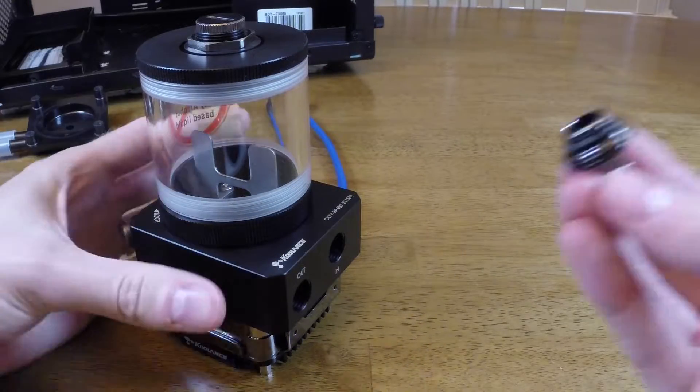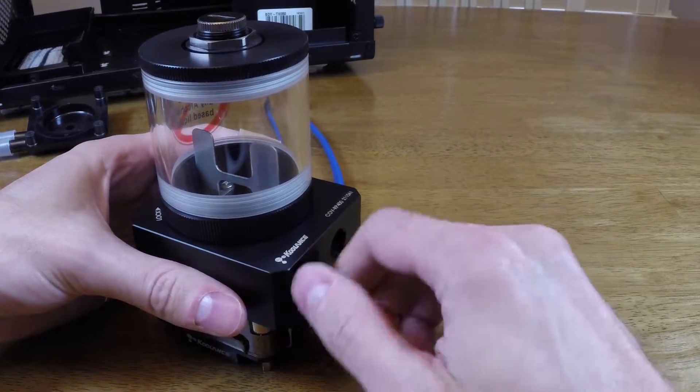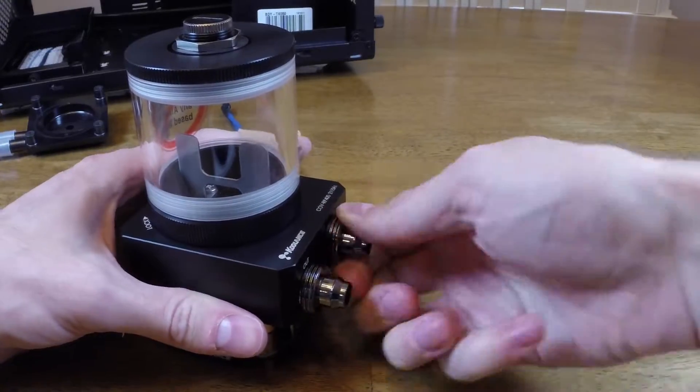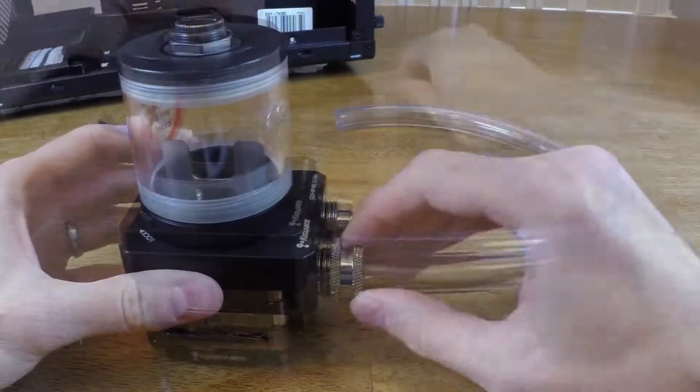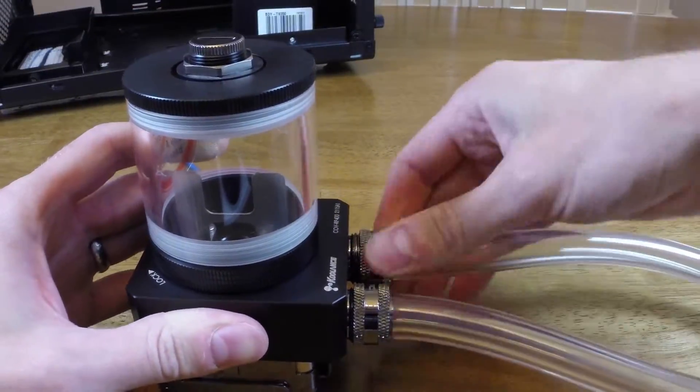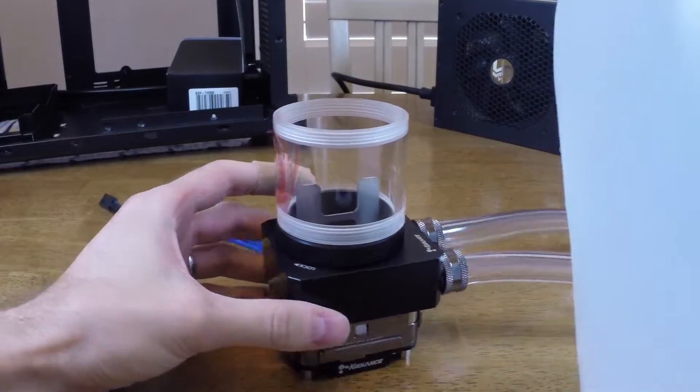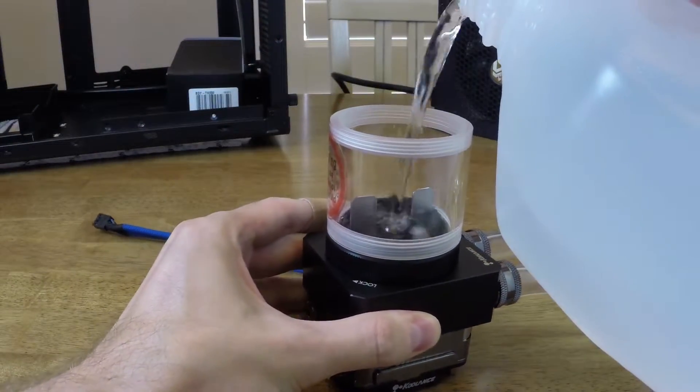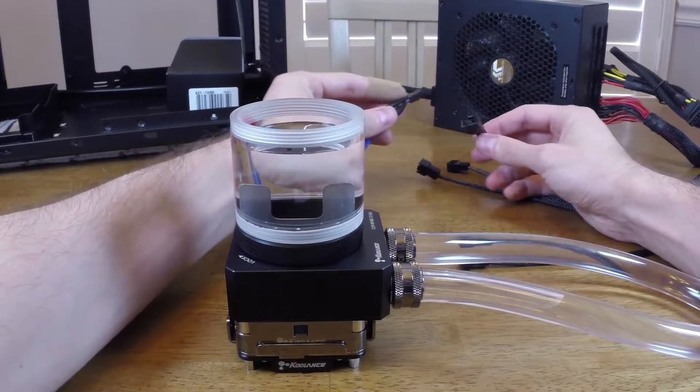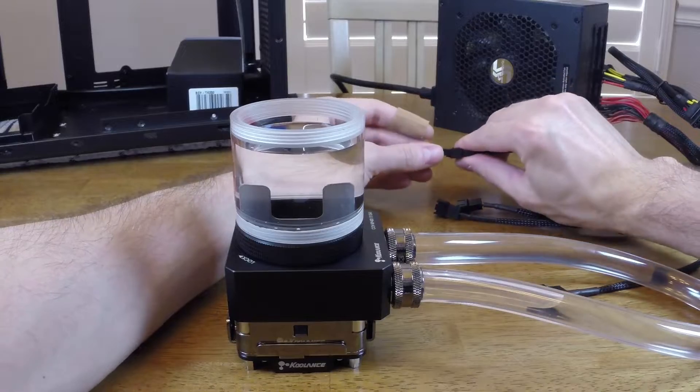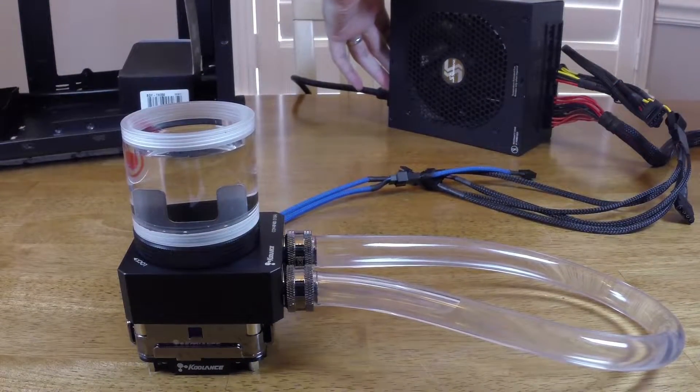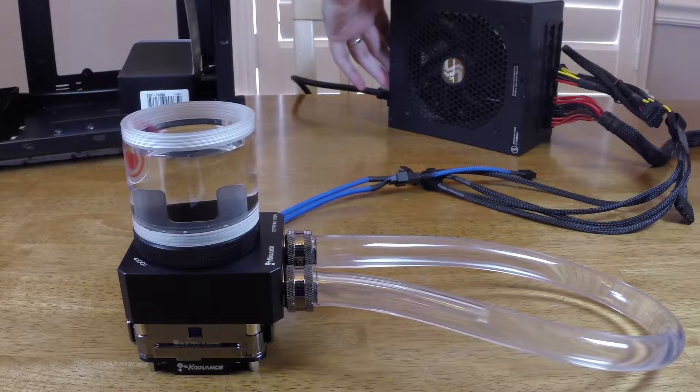We'll go ahead and test the pump for leaks so we'll install our fittings and some tubing. We'll attach the pump to a power supply and add some water. You can look up online how to short the 24 pin connector in order to have the power supply run when it's not connected to a motherboard.